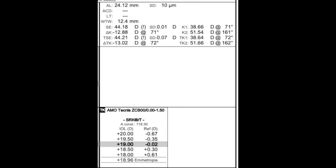That would leave the patient around zero sphere with around minus 5.05 diopters at 82 degrees. Here's a more extreme example — a patient with a corneal graft who has astigmatism of 13.02 diopters at 72 degrees. If you put in the recommended 19-diopter lens, you're going to leave that patient with plus 6.5 and 13 diopters of negative astigmatism. So if you want to minimise this patient's hyperopic component, you really need to be aiming for minus 6.5 in this patient.